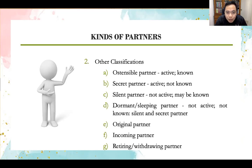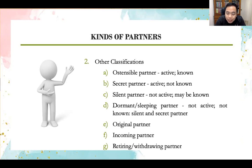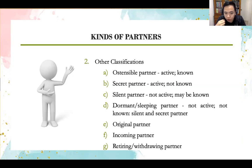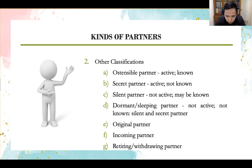An ostensible partner is an active or known partner. A secret partner and silent partner are other classifications. A dormant or sleeping partner is one who is not active in the administration of the partnership business and is not known to be a partner. Other types include original partner, incoming partner, retiring partner, and withdrawing partner.